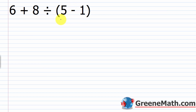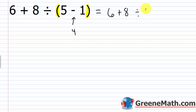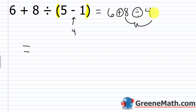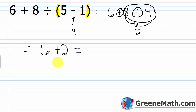Next: 6 plus 8 divided by the quantity (5 minus 1). The quantity 5 minus 1 is inside parentheses, so we perform that first. 5 minus 1 is 4, so we replace that with 4, giving us 6 plus 8 divided by 4. Now we have addition and division; division has higher priority, so we do 8 divided by 4 first, which is 2. That gives us 6 plus 2, and 6 plus 2 is 8.